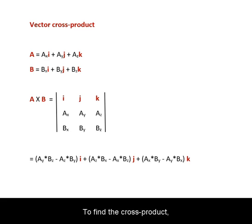To find the cross-product, denoted by a large X, you set up a 3 by 3 matrix with the first row as the unit vectors. The second row are the components of the first vector, and the last row are the components of the second vector.